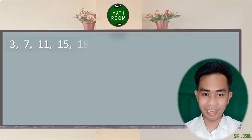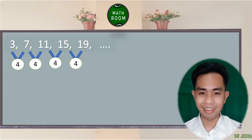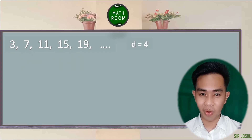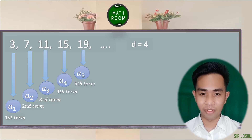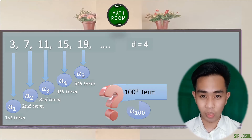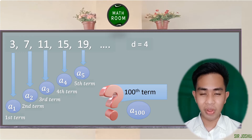The sequence 3, 7, 11, 15, 19, and so on is an example of an infinite sequence since we don't have any last term. The common difference is 4, since we add 4 to each term to get the next term — d is equal to 4. We know that 3 is our first term, a sub 1. Seven for a sub 2, 11 for a sub 3, 15 for a sub 4, and 19 for a sub 5. What about the 100th term? We need to find a formula that will help us easily find the value of the 100th term.